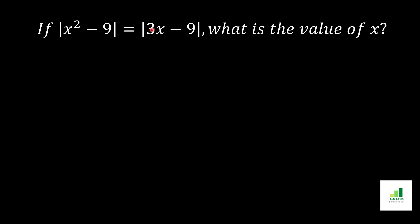In order to solve this question, first we will simplify. You can see that this value is x² minus 9, and 9 is equal to 3², which means this will convert into the a² - b² formula. So we will convert this value using the a² - b² formula and we will get |x + 3| · |x - 3|.